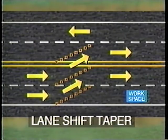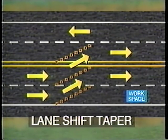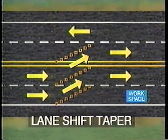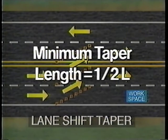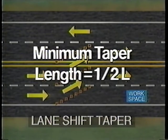The lane shift taper is used when traffic is only being shifted and no merge is required. Therefore, the taper does not have to be as long as a merging taper. The minimum taper length is 1/2 L, where L is the computed length of a merging taper for the given posted speed and width of the lane shift.